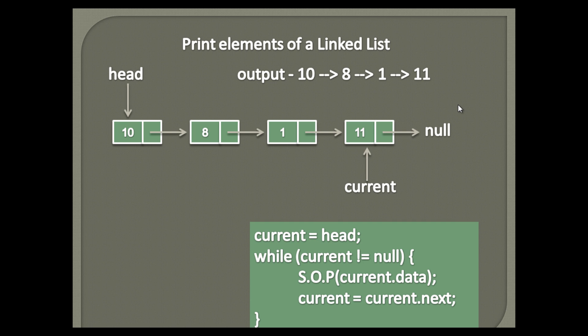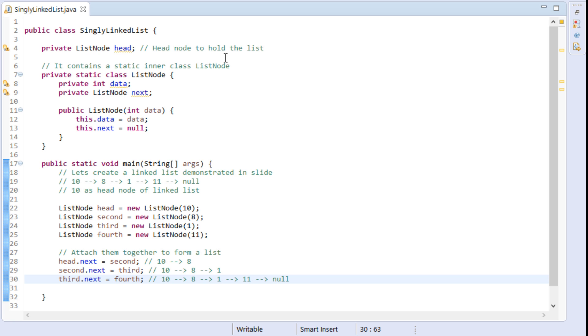That is, the element next to the fourth node is null. This signifies that the list has reached its end and there are no more elements to traverse. Now when it checks the while loop condition, current node points to null, therefore the while loop condition fails and the loop terminates. Thus, through this demo we saw how to traverse the complete list one by one and print its elements on the console. Let's move to Eclipse and see its working through code.